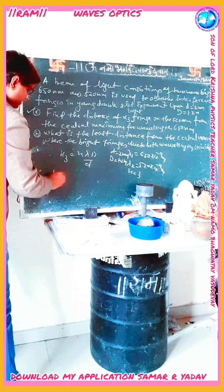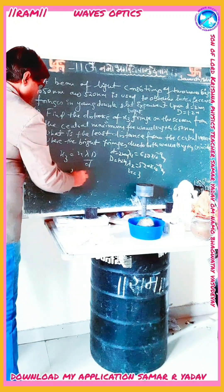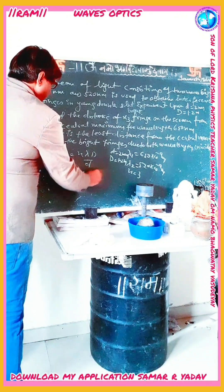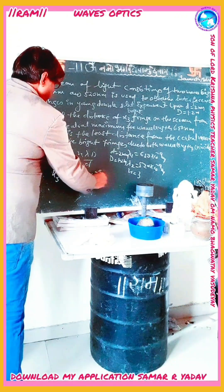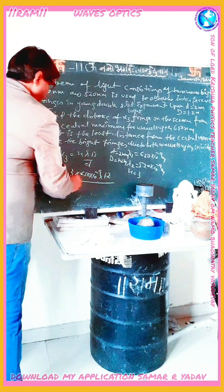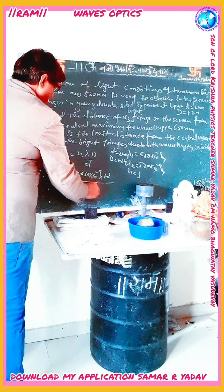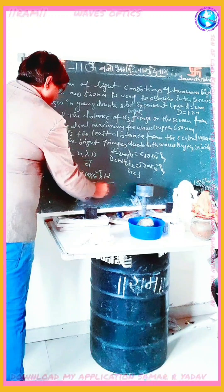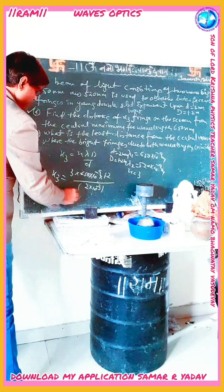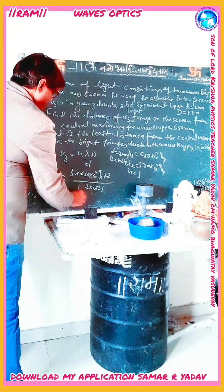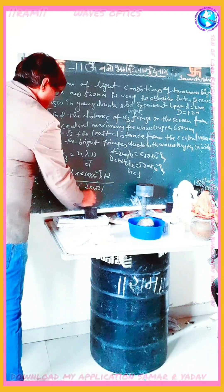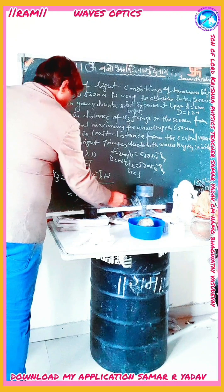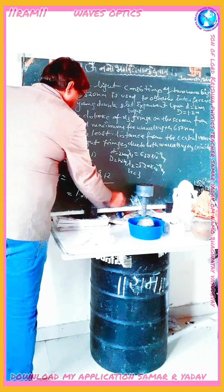For the third maxima, n is equal to 3. The condition is X3 is equal to n lambda capital D upon small d. So X3 is equal to 3 into 650 into 10 to the power minus 9 into 1.2 divided by 2 into 10 to the power minus 3. Solving this we get 1.7 into 10 to the power minus 3 meter, or 1.7 millimeter.